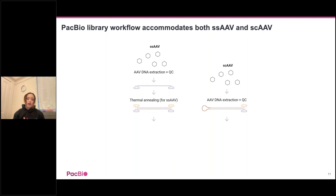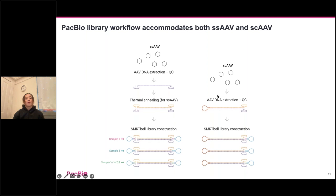During SMRTbell library construction, the thermally annealed double-stranded single-stranded AAV structure has SMRTbells on both ends. Multiplexing is done using barcoded adapters, whereas for self-complementary AAV, the adapter is only on one end. This distinction is important because the AAV run design mode on Sequel 2 and 2E systems handles both molecule types.